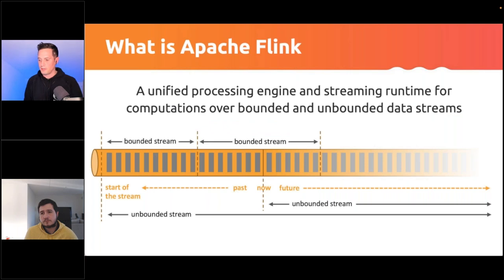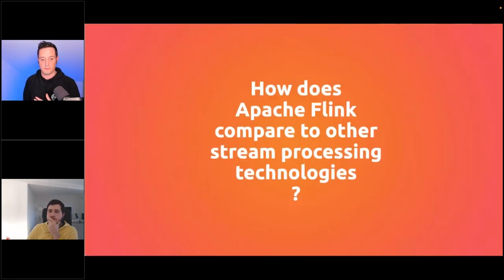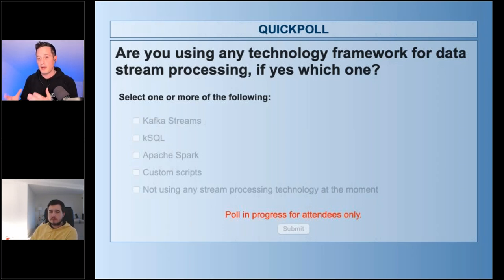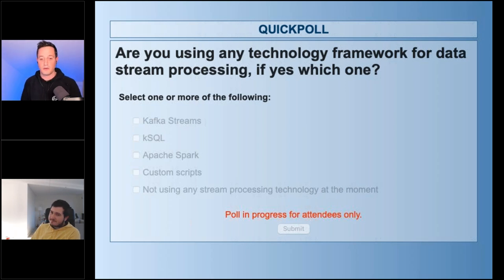Data stream processing is not a completely new topic — there are other technologies enabling the same kinds of transformations on data streams. The next poll asks: if you are doing stream data processing, which technologies are you using? Options include Kafka Streams, Carapace, custom scripts, Apache Spark, or ksqlDB. Meanwhile, let's ask Filip why Apache Flink is different and how it compares to other streaming technologies.